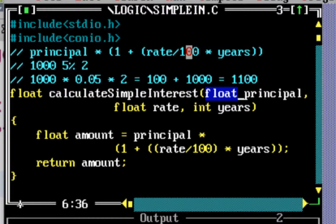Principle can be thousand point, like thousand and two rupees fifty-five, so I use a float. And rate can be 5.5 percent or 6.5 percent as well, so I use a float for that as well.